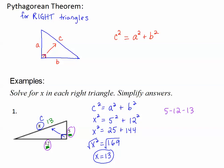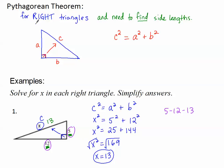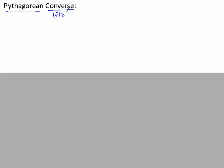We're now going to examine the Pythagorean converse, but let's look back at the Pythagorean theorem first. The Pythagorean theorem is for when we have a right triangle and need to find side lengths. So that means if we have a right triangle, we can find the side lengths. How do we say that backwards? Remember, converse means we flip it.